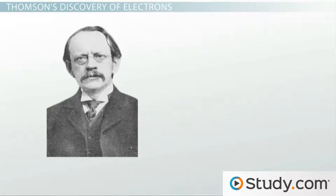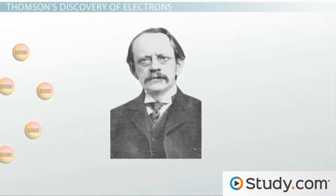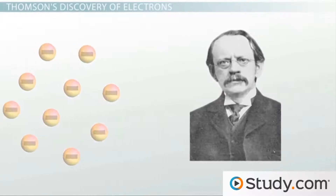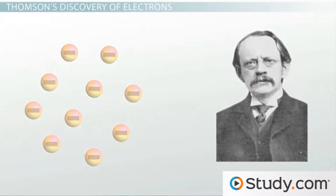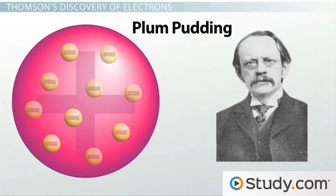Thomson went one step further and determined that these negatively charged electrons needed something positive to balance them out, so he determined that they were surrounded by positively charged material. This became known as the plum pudding model of the atom — the negatively charged plums were surrounded by positively charged pudding.